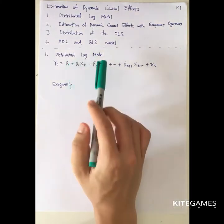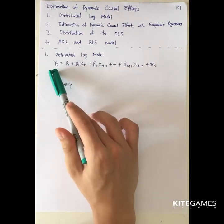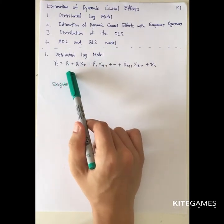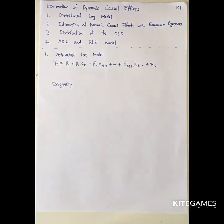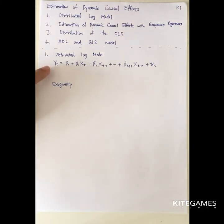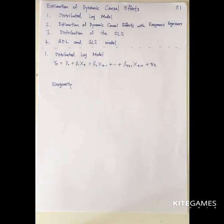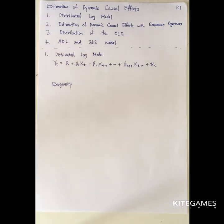First is the distributed lag model. The yt is a function of x with lags of x. Compared to the previous case — the time series regression model — yt is maybe a function of yt-1 or yt-2 up to yt-p, which are the AR models. Here, we do not have the autoregressive component; we just have the distributed lag model. That means y just depends on other variables.